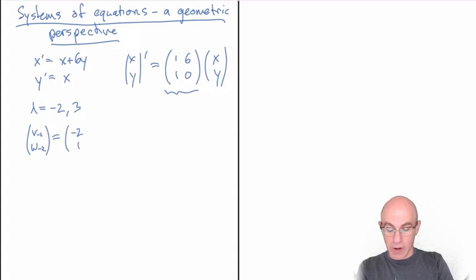You remember in the general solution, we end up multiplying that by a constant, which is why it doesn't actually matter. Its amplitude doesn't matter, just its direction. And the eigenvector associated with lambda equals 3 is (3, 1).